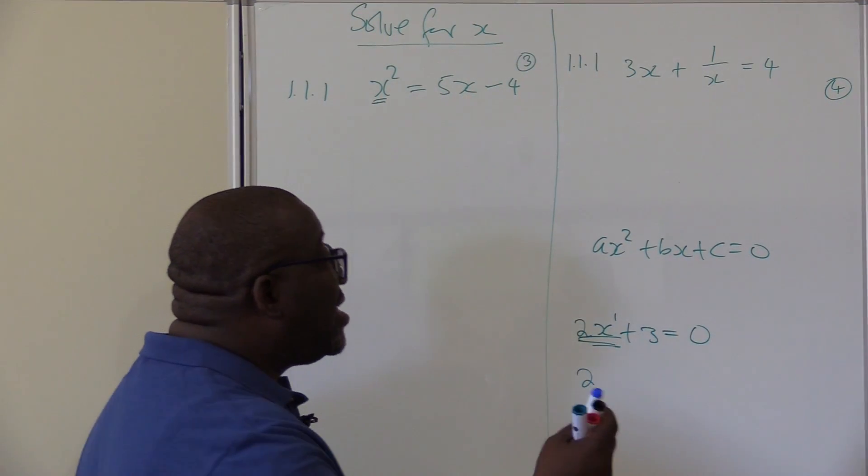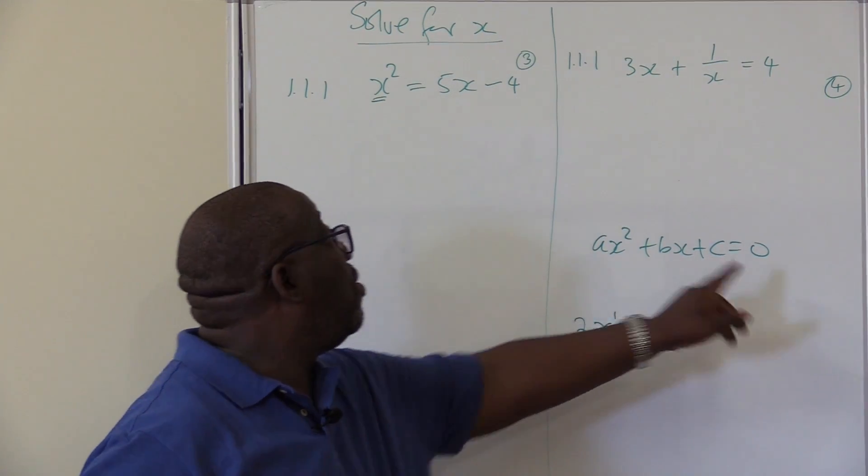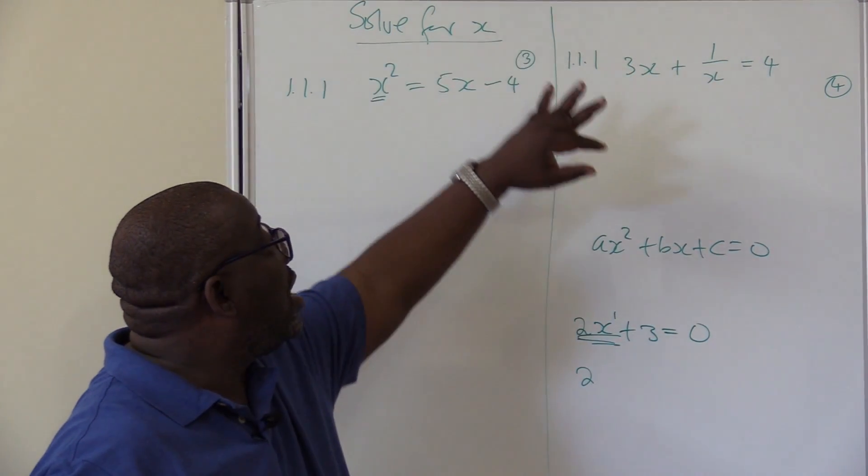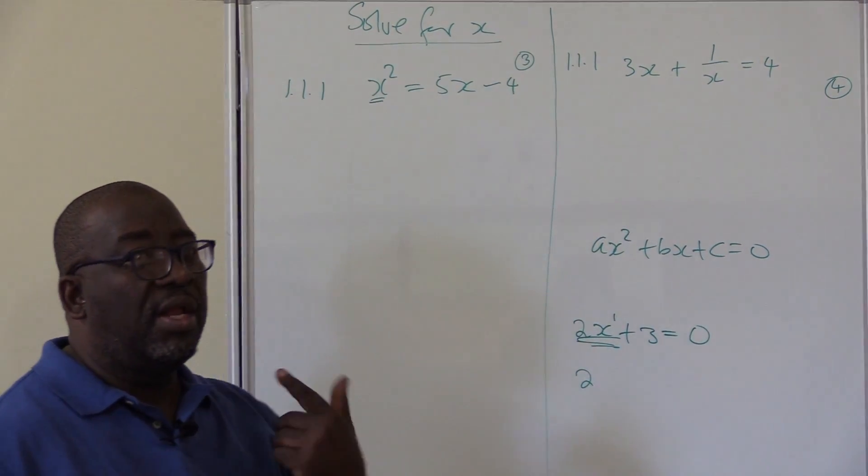Look at this one. Is it arranged in this form? Remember, on the right hand side you must always have 0. This is the left hand side, this is the right hand side. Is this 0? No. Let us arrange it.